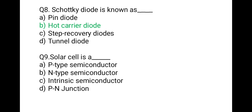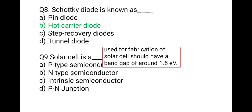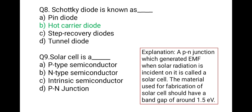The next question: a solar cell is a — first P-type semiconductor, second N-type semiconductor, third intrinsic semiconductor, last PN junction. A PN junction which generates EMF when solar radiation is incident on it is called a solar cell. The material used for a solar cell should have a band gap of around 1.5 eV. So the correct option is D: PN junction.